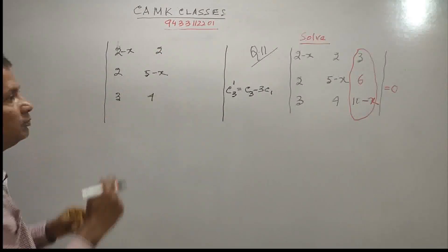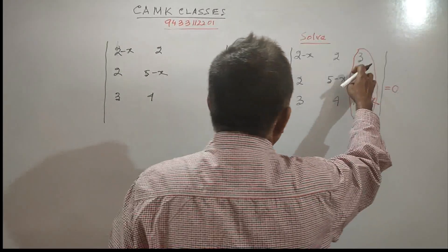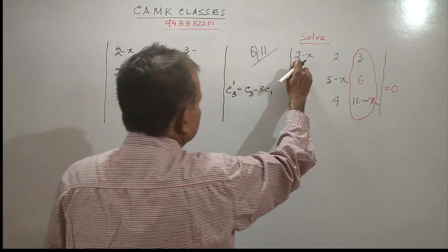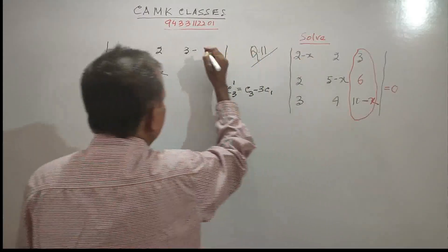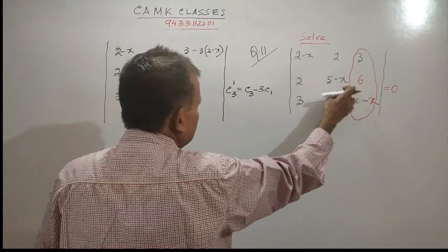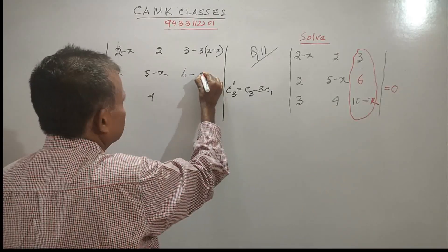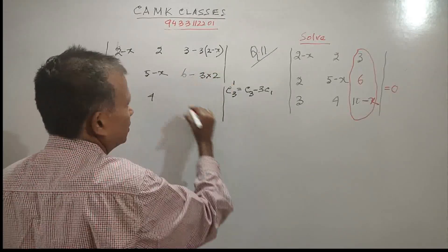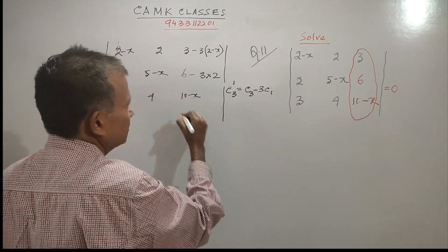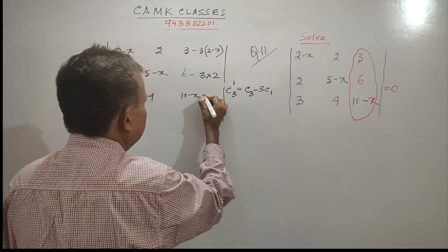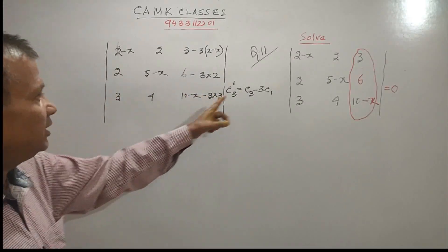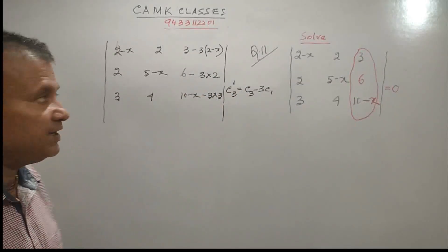We are not changing the first column and the second column — first and second columns remain unchanged. For the new C3, the entries become: 3 minus 3 into (2 minus x), then 6 minus 3 into 2, and then 10 minus x minus 3 into 3. So this is your C3 minus 3C1.